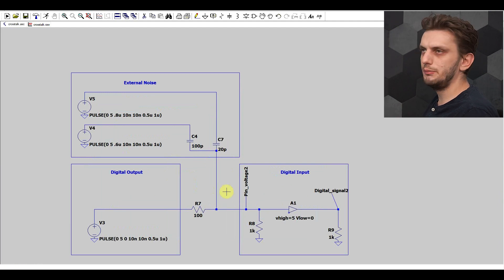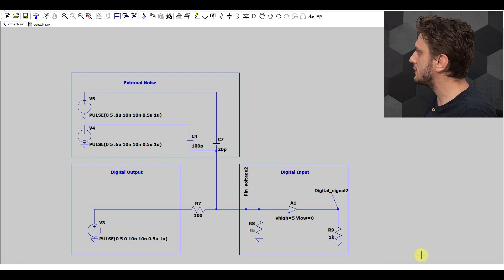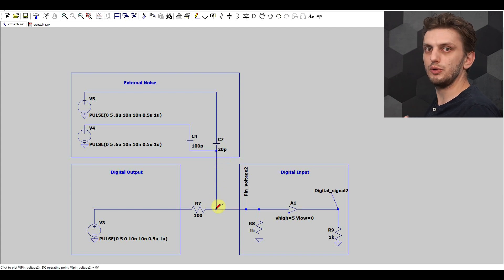Now we can add a bit of external noise to the mix. So what I got here is the exact same circuit, only I added some extra pulses coupled through some capacitors that will be injecting some noise into this communication line.